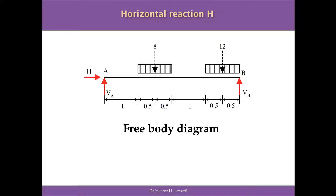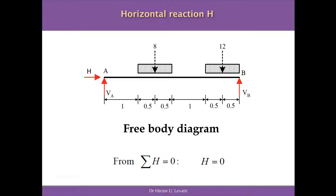The first step is to assume the reactions for this simple supported beam. We expect a horizontal reaction and a vertical reaction at point A (pin support), and a vertical reaction at point B (roller). Summing forces in the horizontal direction, there are no horizontal actions, so the horizontal reaction H is equal to zero.